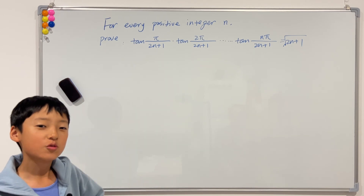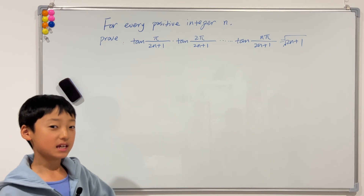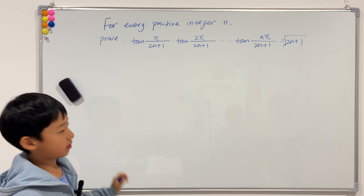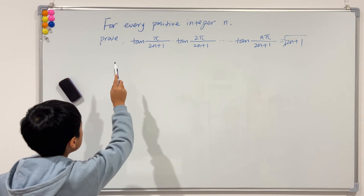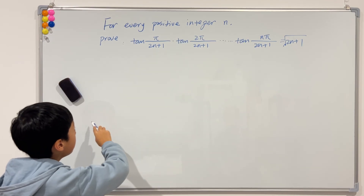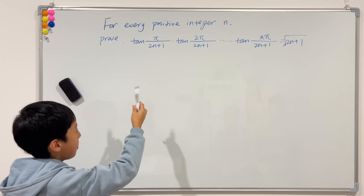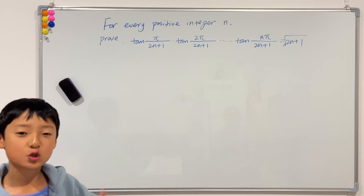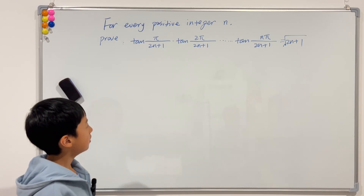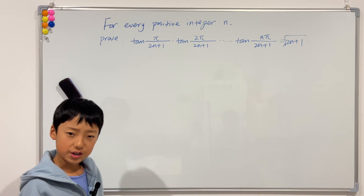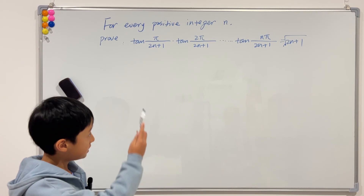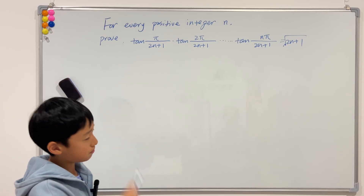Hi guys, welcome back to another video of me teaching. Today I have this question for you: for every positive integer n, prove that tangent of something times tangent equals the square root of 2n plus 1. But this is hard, isn't it? A bunch of things multiplied together, and we have to prove it's equal to such a simple expression.